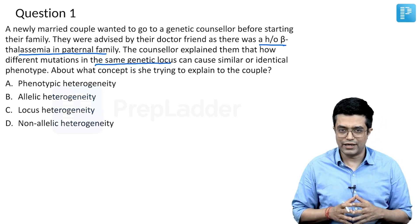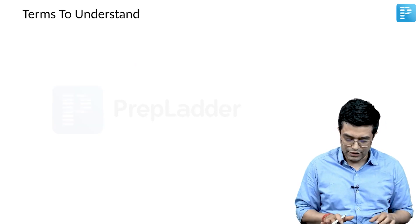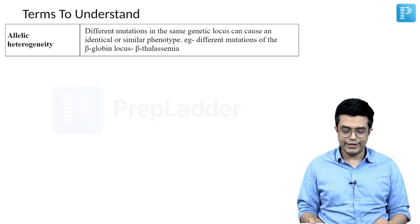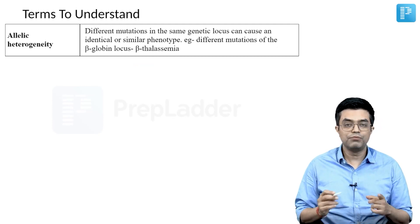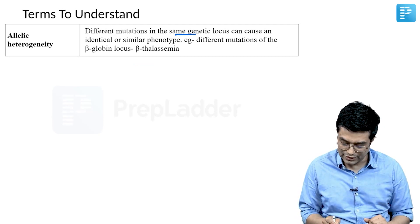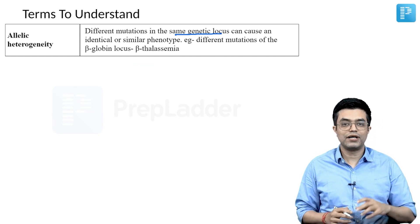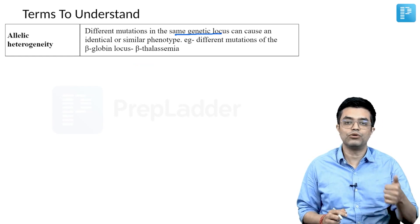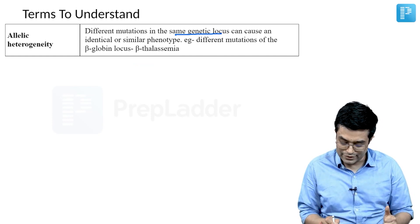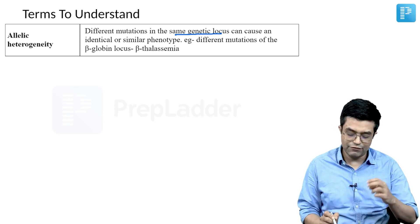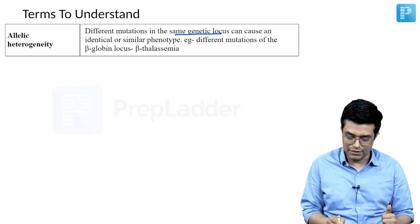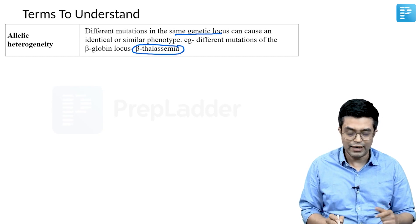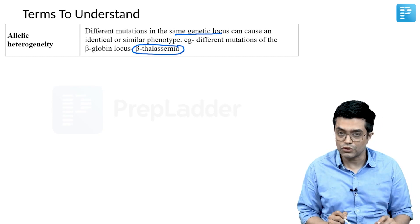these terms? Let us understand what they actually mean. First is allelic heterogeneity: different mutations in the same genetic locus can cause identical or similar phenotype. A typical example is different mutations occurring in the beta-globin locus can produce beta-thalassemia. This is the concept which the counselor was talking about - allelic heterogeneity.